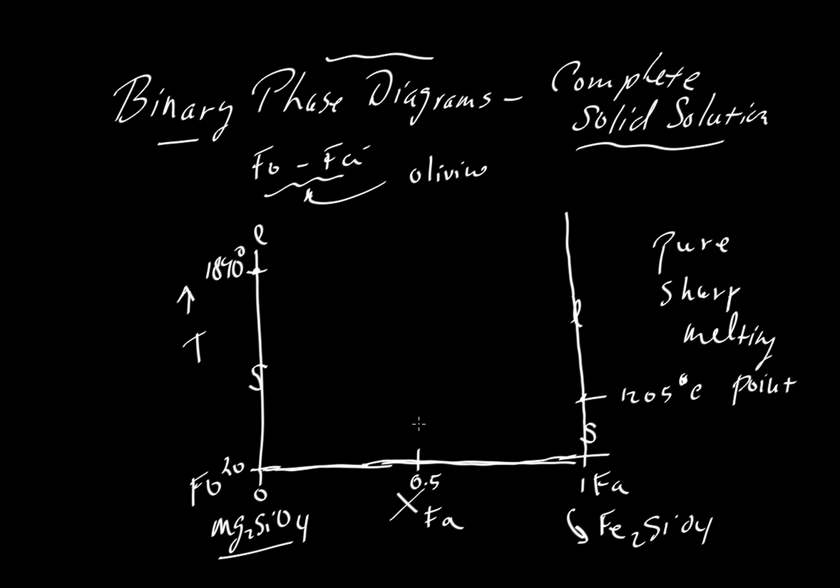For this intermediate composition, you might imagine that it will begin melting at some temperature above 1205, below 1890. It will begin melting somewhere in here, and it will finalize its melting also at some temperature below 1890.